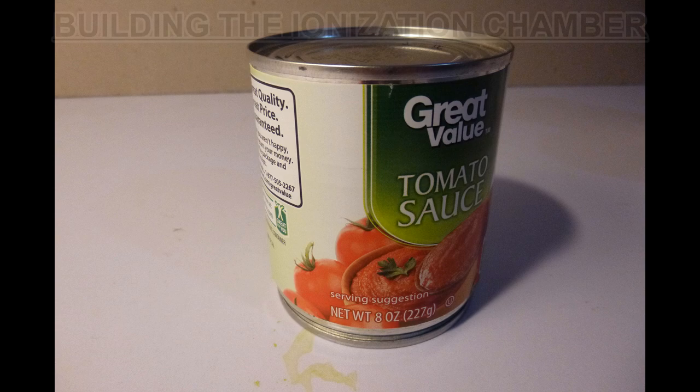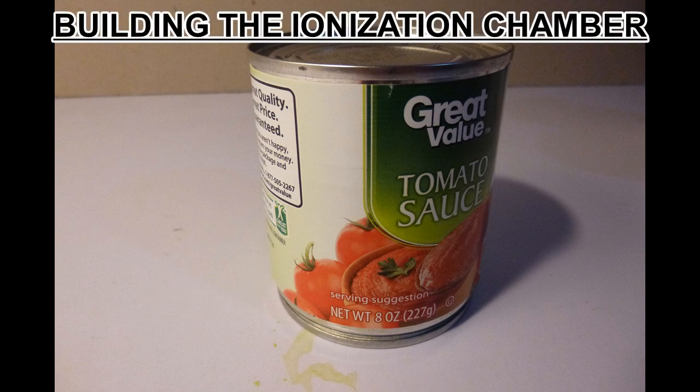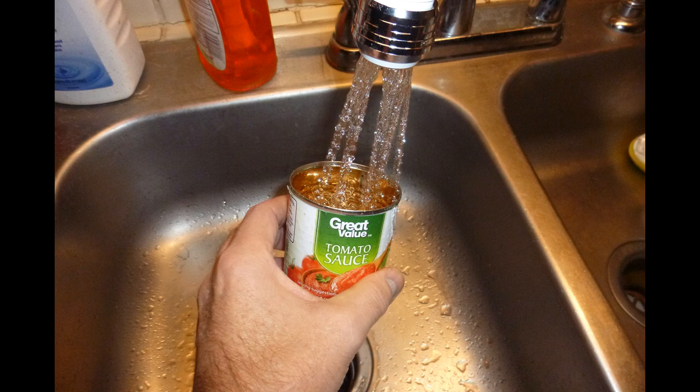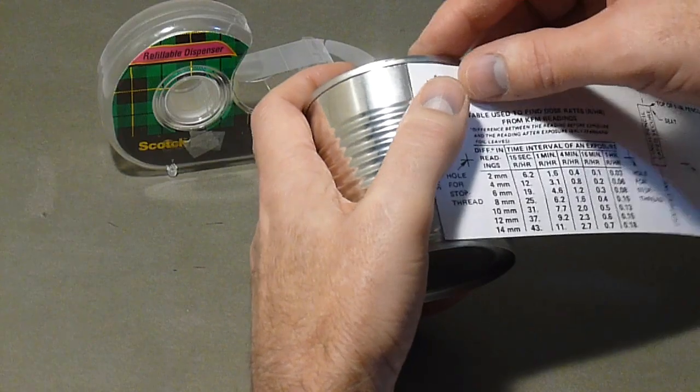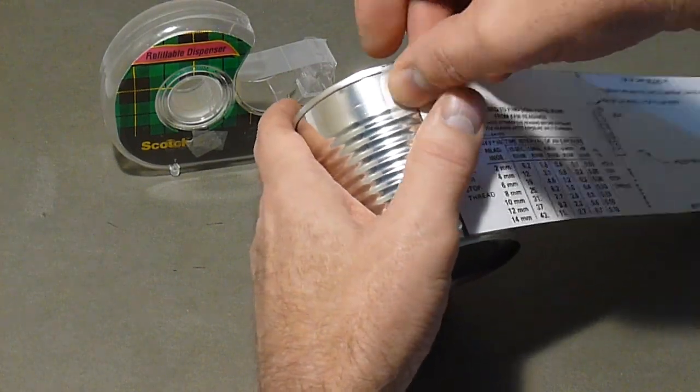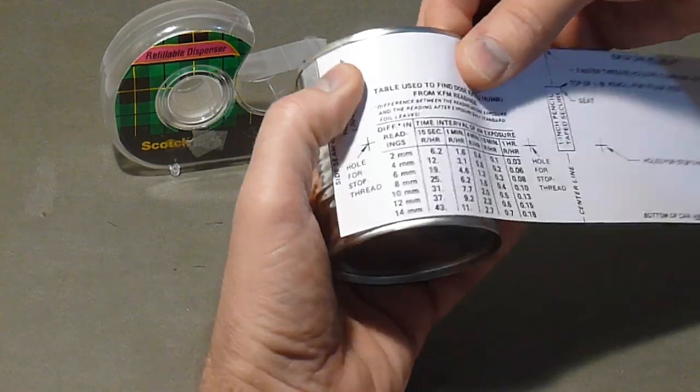To make the ionization chamber, open up and empty the tomato sauce can. Wash the inside, then dry it and remove the outer label. Tape the upper left corner of the KFM label to the can where the seam is located.